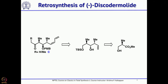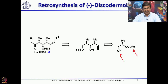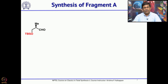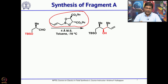Let us see how he synthesized all the fragments and then combined them to form Discodermolide. The first step was to protect the primary alcohol and reduce the ester. The primary alcohol was protected as a TBS ether and then DIBAL reduction gave the aldehyde. The first key reaction was the Roush crotylboration, using a chiral crotylborane derived from diisopropyl tartrate.